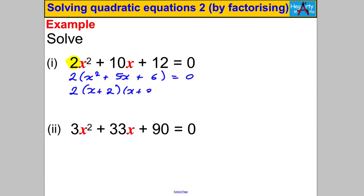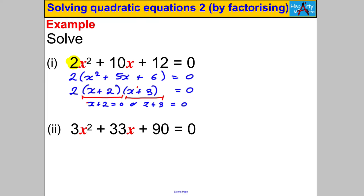Then factorize the quadratic expression inside the bracket to get (X + 2)(X + 3) = 0. Now we have three things multiplying to give 0. The 2 is fixed — it can't be 0 — so either X + 2 = 0 or X + 3 = 0. Subtracting 2 from both sides gives X = negative 2, and subtracting 3 from both sides gives X = negative 3. Underline your answers.